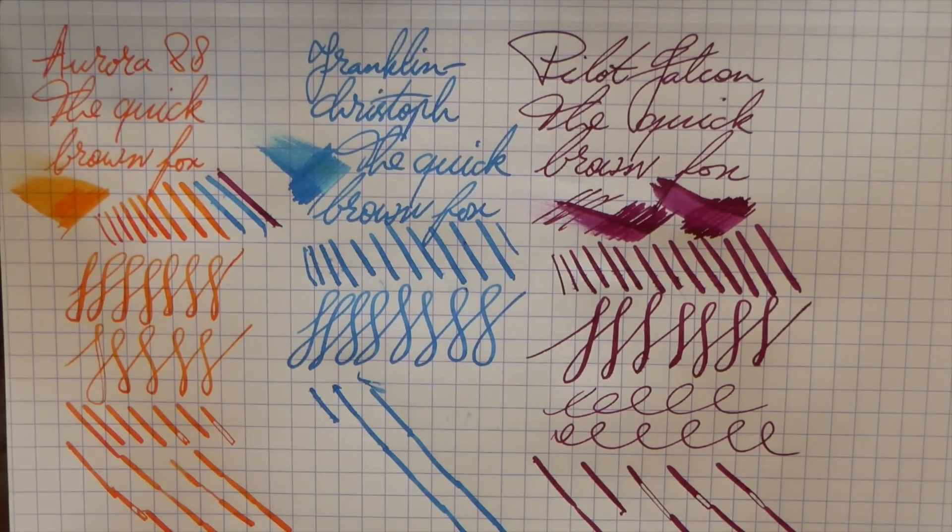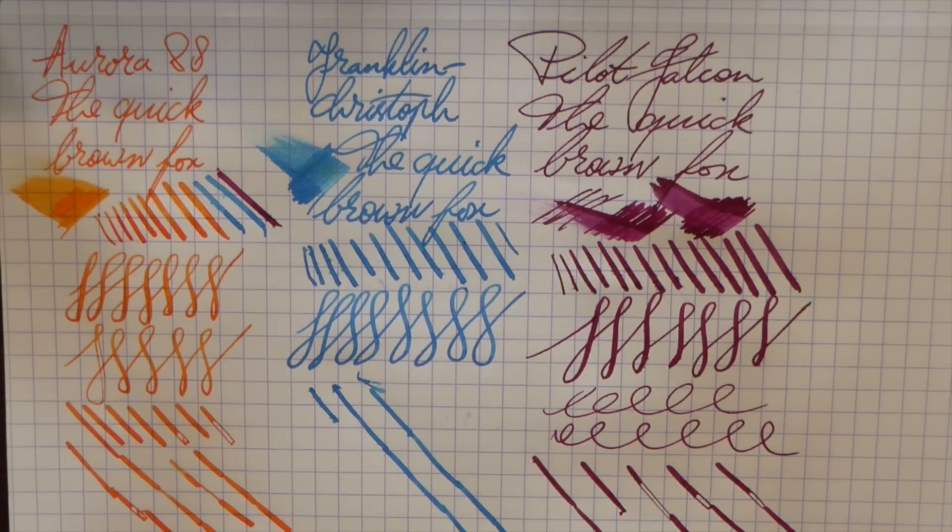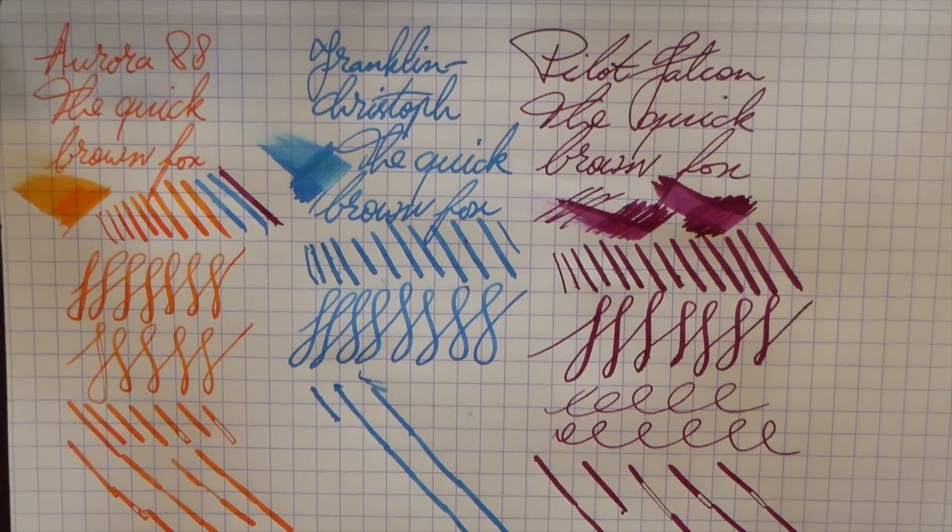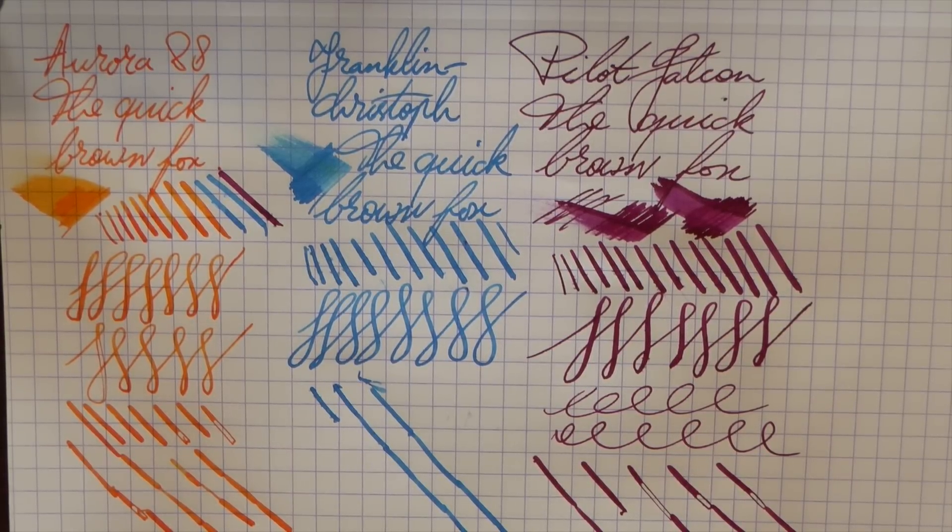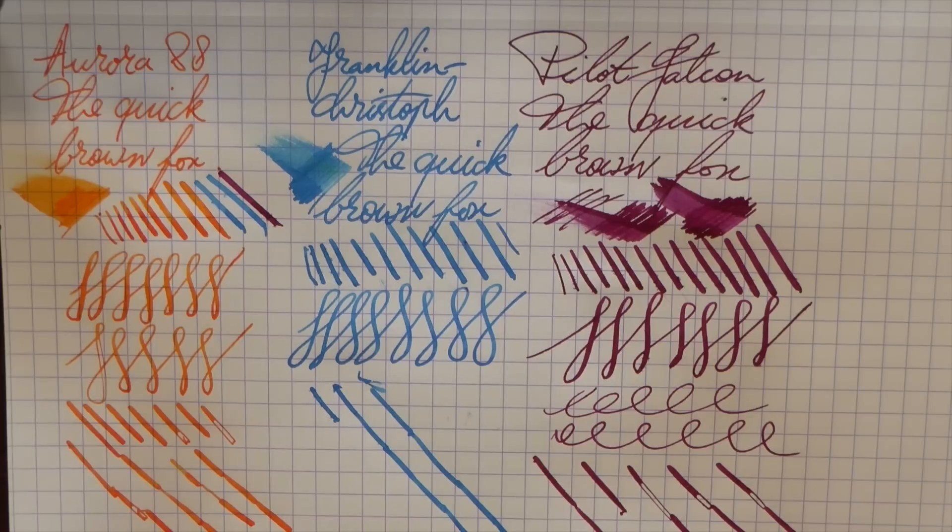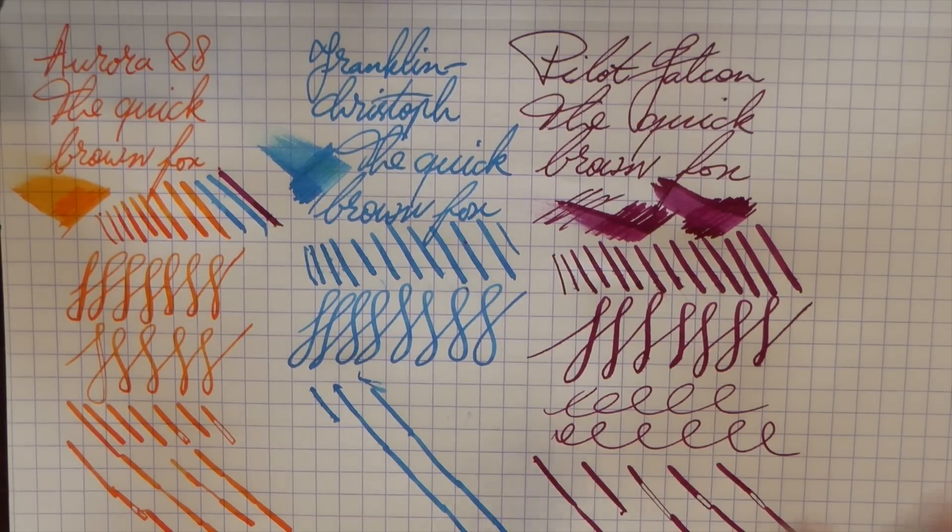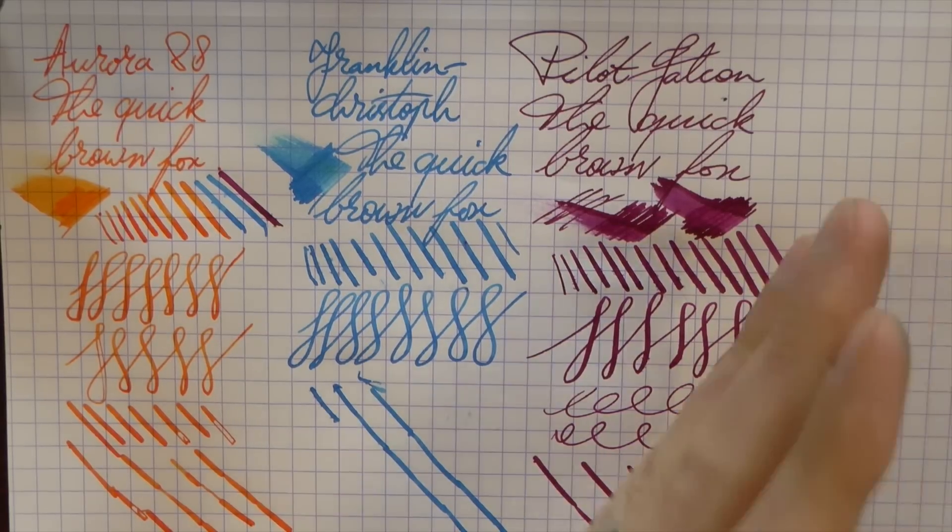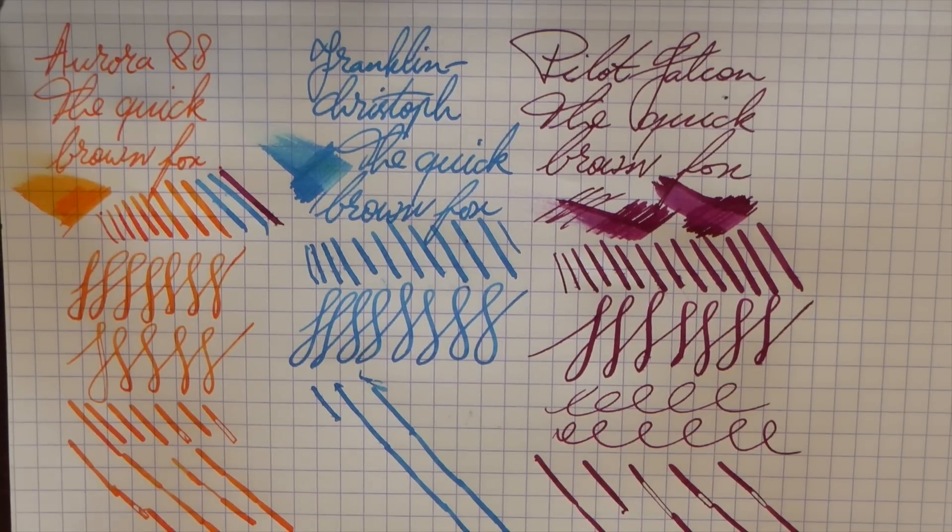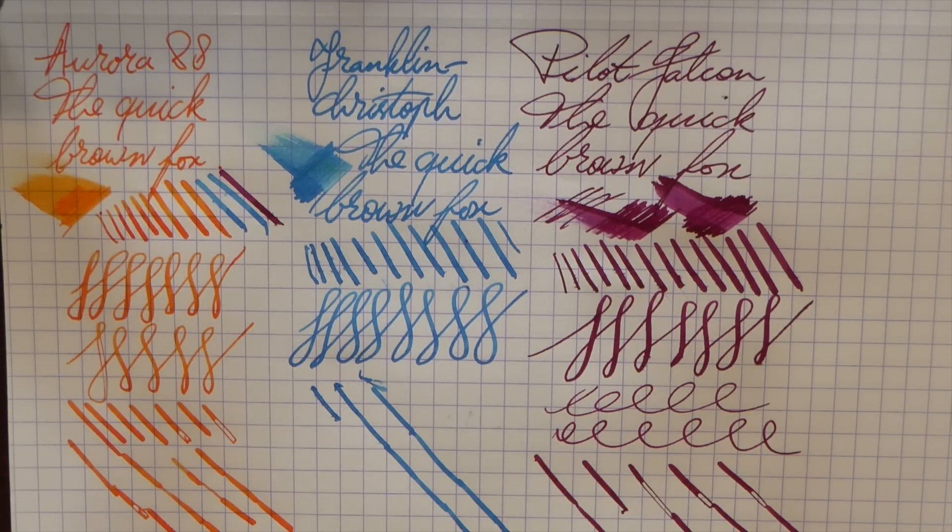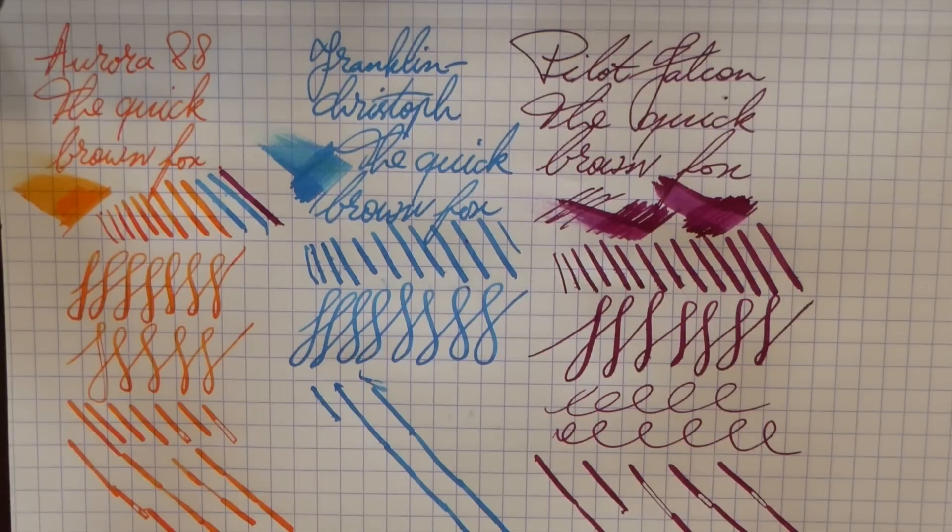So there you have it. A three-way between modern flex nibs. I hope this was useful. I hope this has answered some of the questions you may have had about the flexibility of these nibs. Let me give you a general conclusion. If you want flex, buy vintage. Vintage 14K flex really is unparalleled. The feeds keep up better. There's less railroading. There is better flex action, softer flex action. It is very pleasant. And yes, you can actually have vintage flex for $20. If you look around a bit on eBay, you don't care much about the looks of a pen. You can definitely have that accessible to you. But today we're talking about modern.